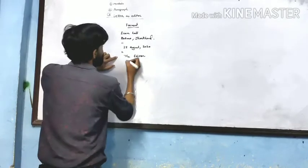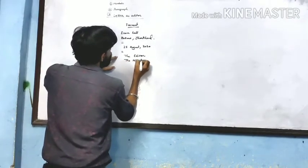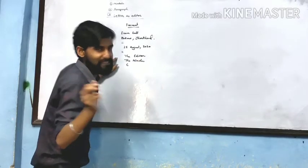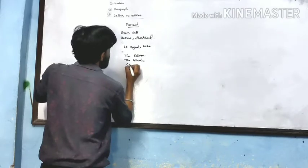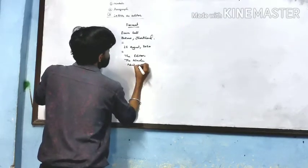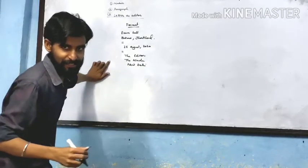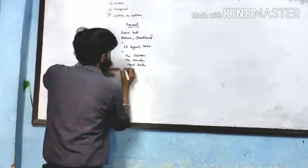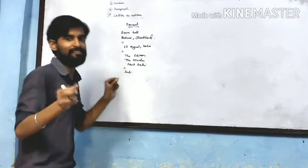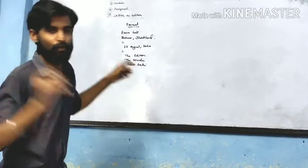We write any name of a daily newspaper — for example, 'Daily News' — and the place where the office is. This will be the editor's address. After that, again leave one line and write the subject of writing. The subject is given in your question.